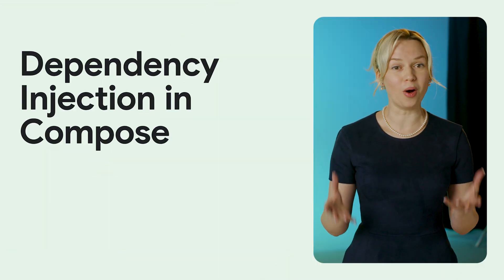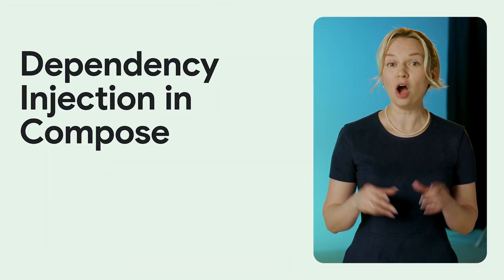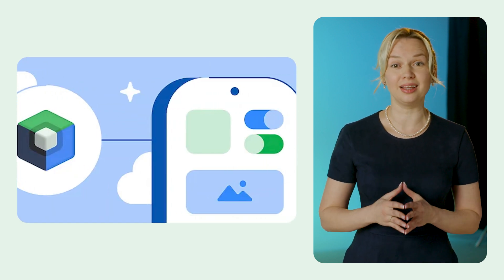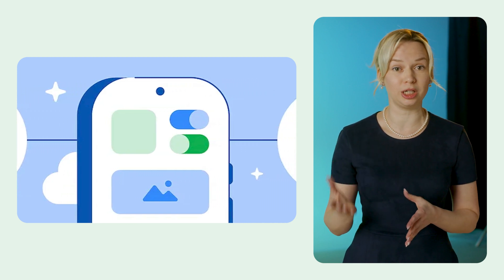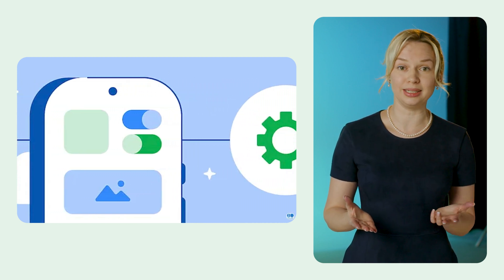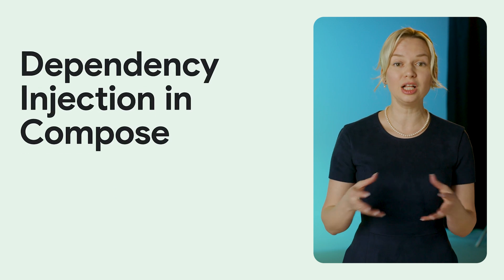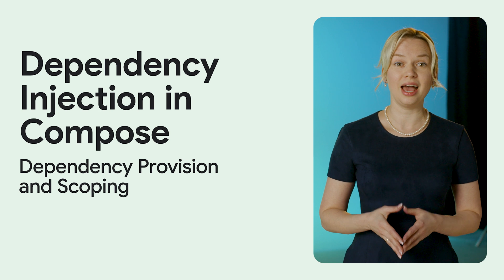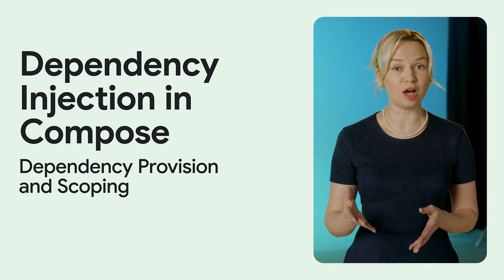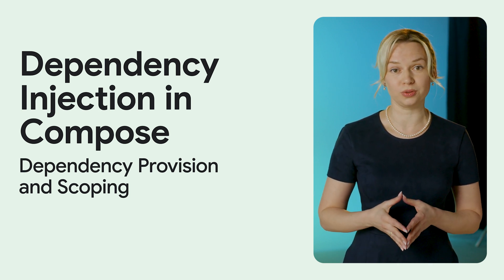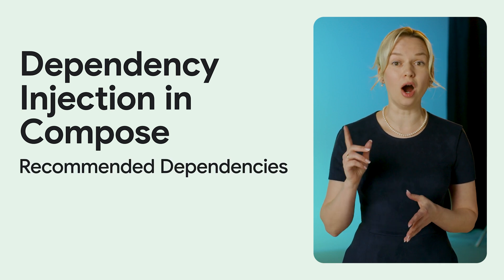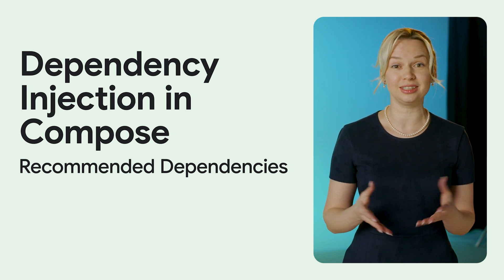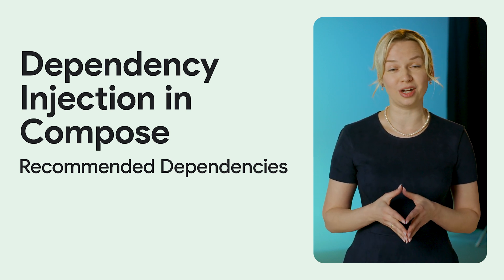Jonathan discussed the importance of dependency injection in Android development, focusing on the integration of Hilt with Jetpack Compose. The post highlights the benefits of dependency injection, such as separation of concerns, testability, and ease of maintenance. It elaborates on dependency provision and scoping, two important features of Hilt, and how these functionalities differ between traditional apps and apps built with Compose. It then provides recommendations for how and where to inject dependencies in Compose apps, taking into account differences in lifecycle management and the way Composable functions behave.